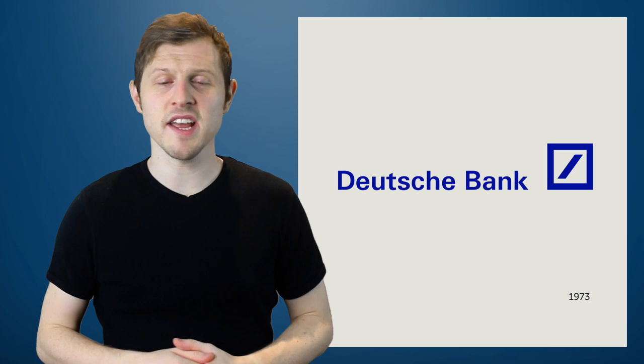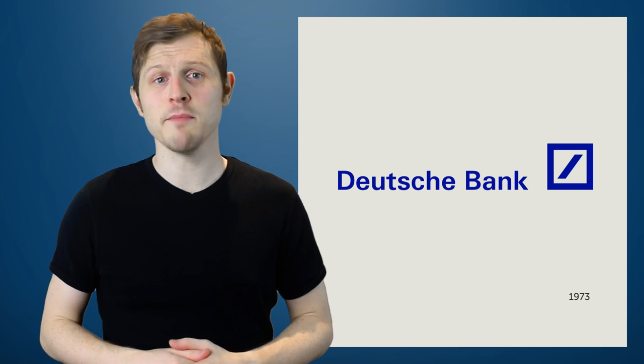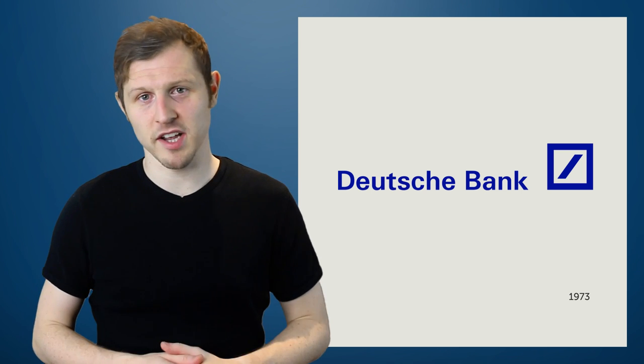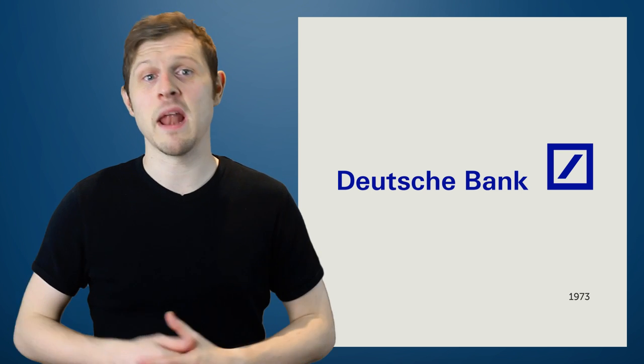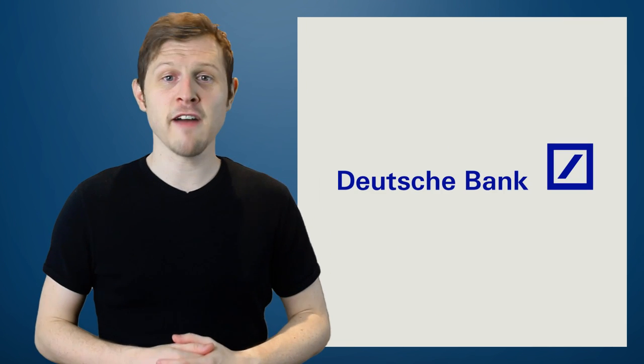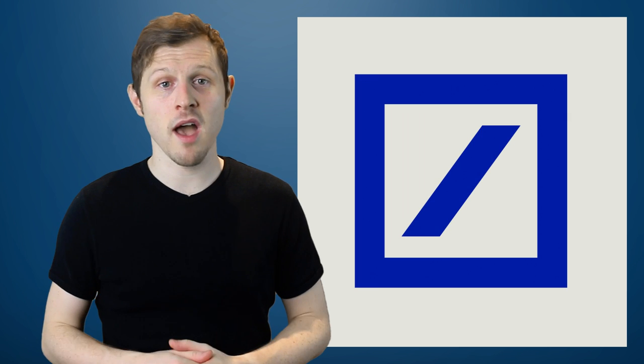The Deutsche Bank logo was designed in 1973 when Deutsche Bank was becoming an international financial institution present in 47 countries. It was time to replace the design that had been used since the mid-1930s and create a symbol that would be recognized around the world. In 1973 eight well-known artists and graphic designers were invited to create the new symbol, though it would be the design by Stankowski that would be the most favored. The board of managing directors felt that the diagonal line in the square was the perfect symbol for growth in a stable environment.